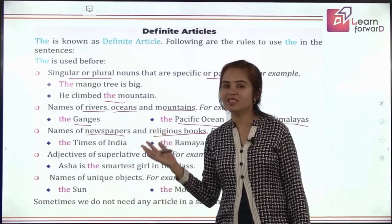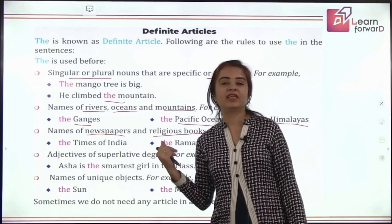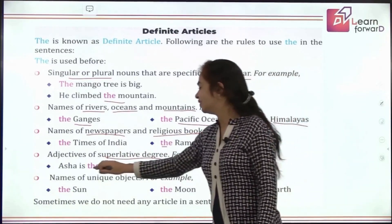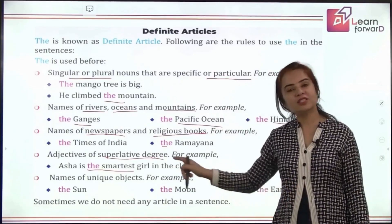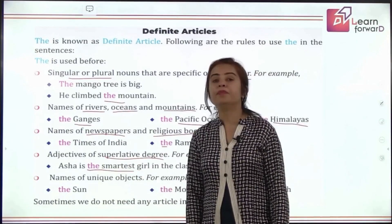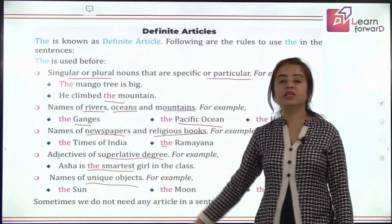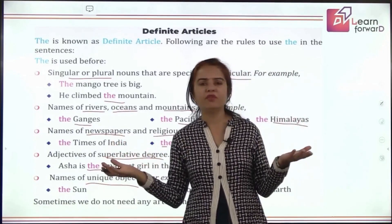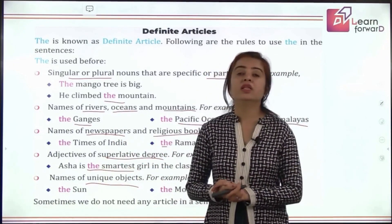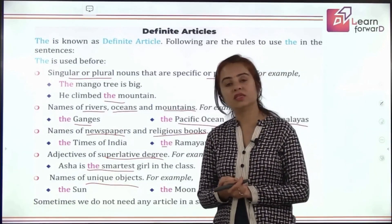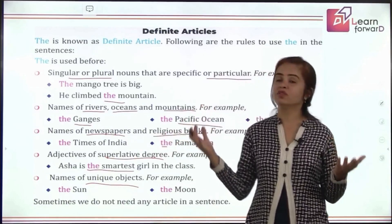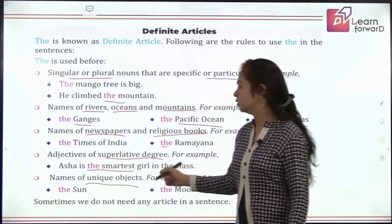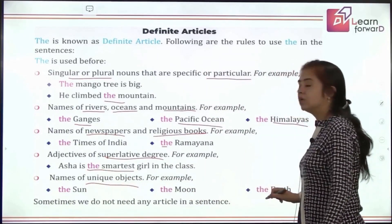We have also learned that the is used before the superlative degree of adjectives — like 'the smartest girl.' Then before unique objects — universal objects that are one of their kind. The sun is only one, the moon is just one, the earth is one, the stars and the sky. So with these universal bodies, we use the: the sun, the moon, the stars, the earth.